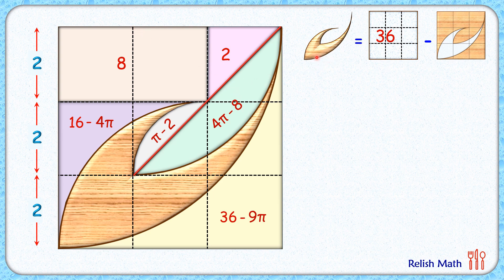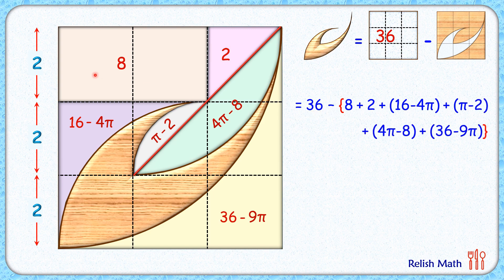Thus the area of this brown shaded region equals the area of the square, which is 36, minus the areas of all six different regions we have calculated. Simplifying: the 4π terms cancel each other out.